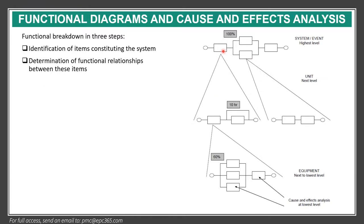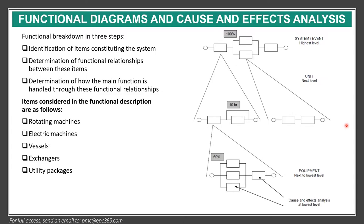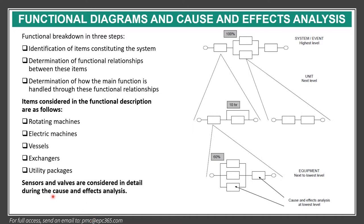For example, if this system fails the whole system fails, or here with redundancy, if one fails there is another one. Then we determine how the main function is handled through these functional relationships. The functional description normally covers rotating machines, electric machines, vessels, exchangers, utility packages, sensors, and valves, since sensors and valves are considered in detail during the FMEA analysis.